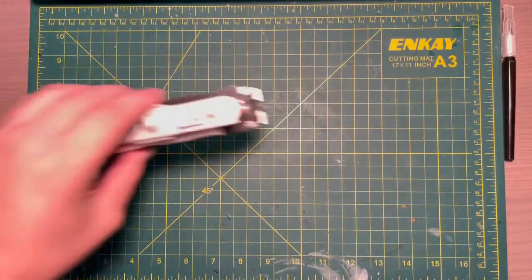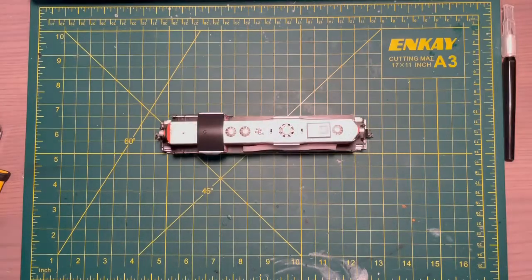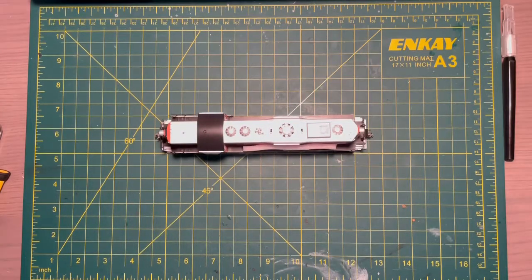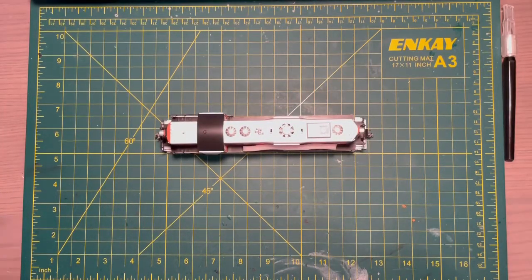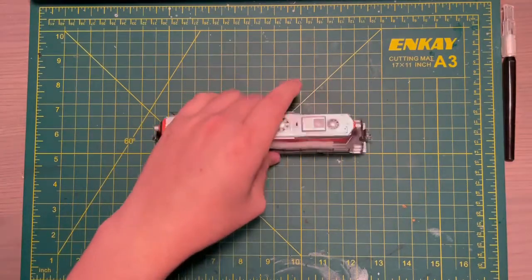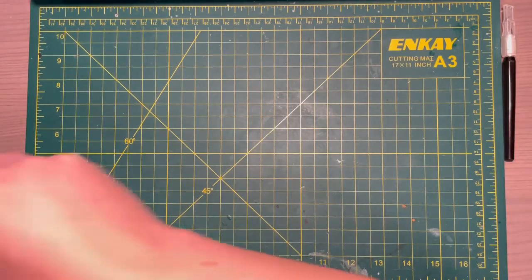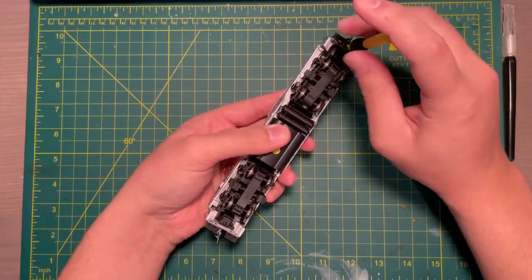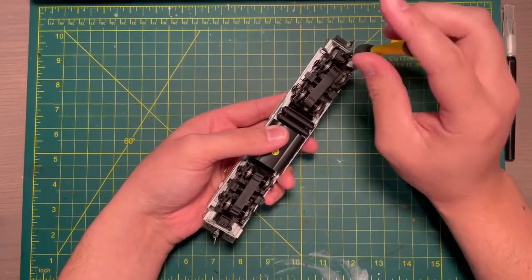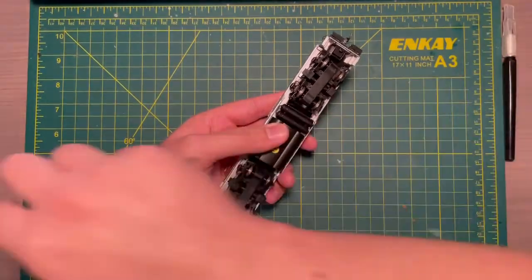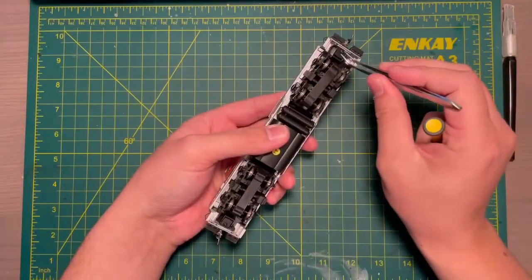This DCC installation is a little different, however it has the same properties. Basically what we're doing is a decoder swap, meaning that we're bringing a decoder from one model to another. This model that currently has the Tsunami 2 does not have the detail parts or is missing parts, and the newer model does have this, so we're going to bring the decoder over to the newer model.